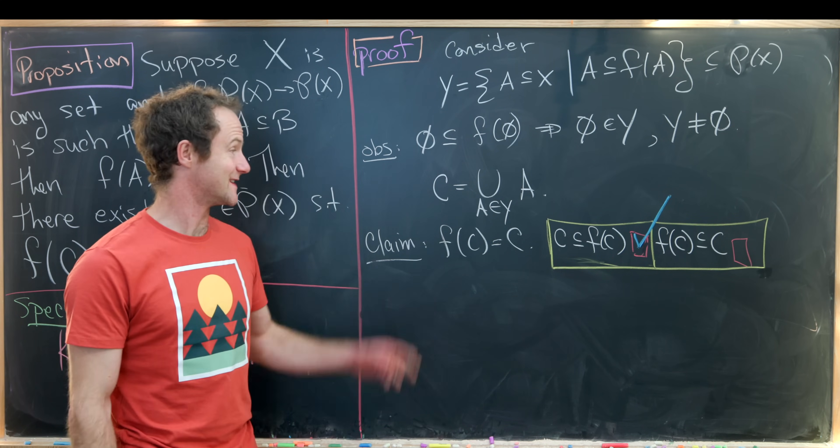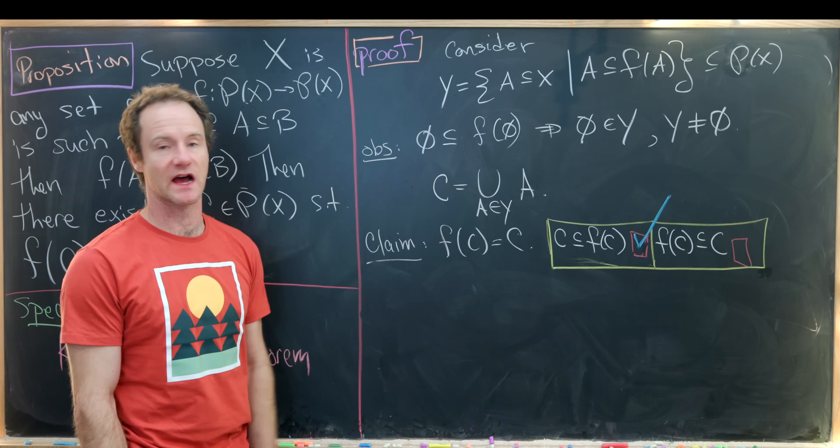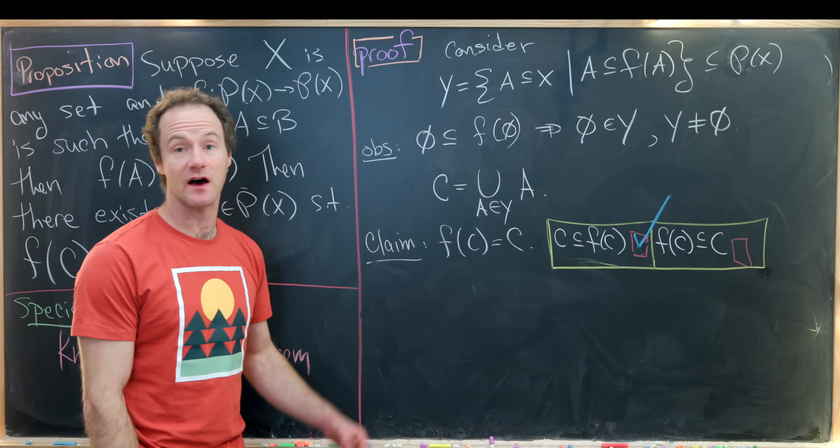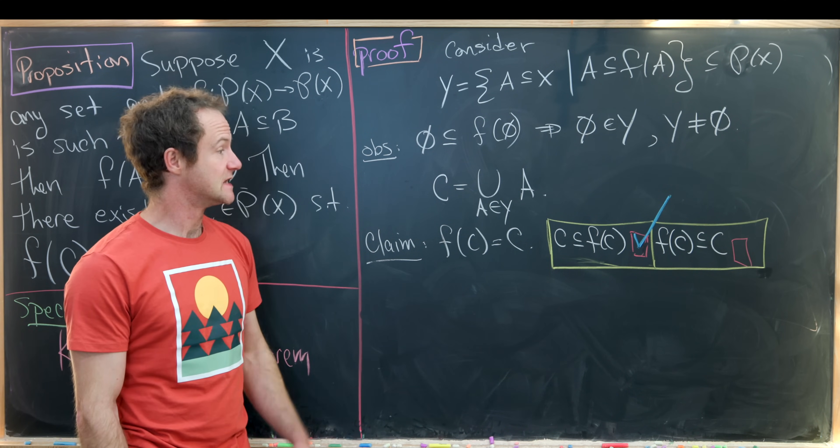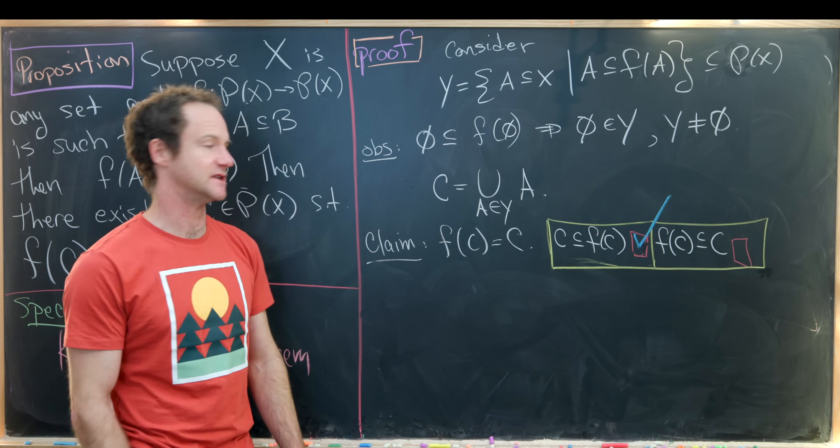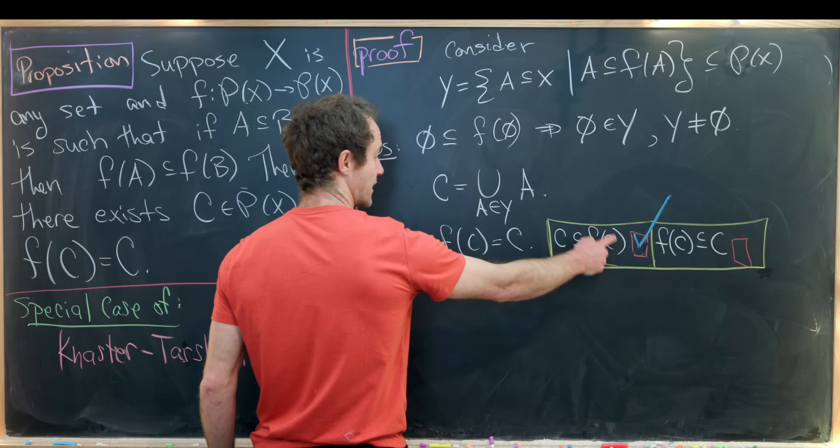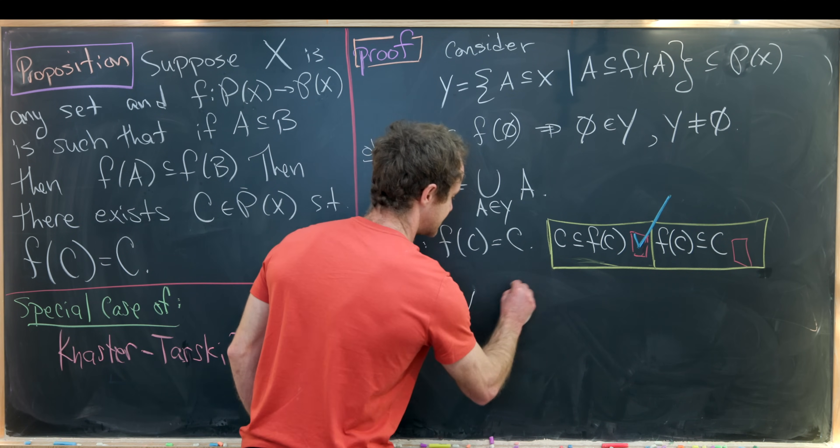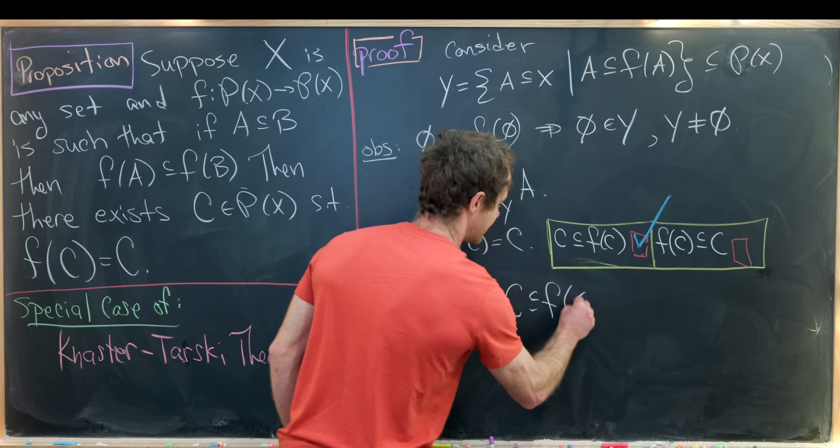We're halfway to showing that this constructed set c was our fixed point. We showed that c was a subset of f of c. Now we'd like to show that f of c is a subset of c. So we'll actually start with this fact. Let's start with c is a subset of f of c.